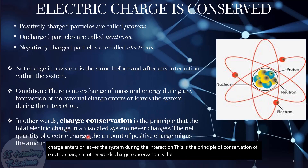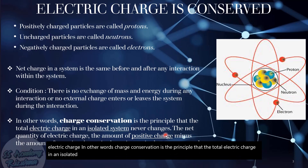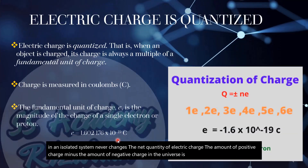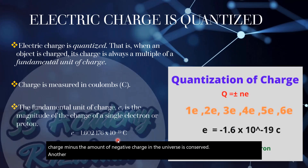In other words, charge conservation is the principle that the total electric charge in an isolated system never changes. The net quantity of electric charge — the amount of positive charge minus the amount of negative charge in the universe — is conserved.